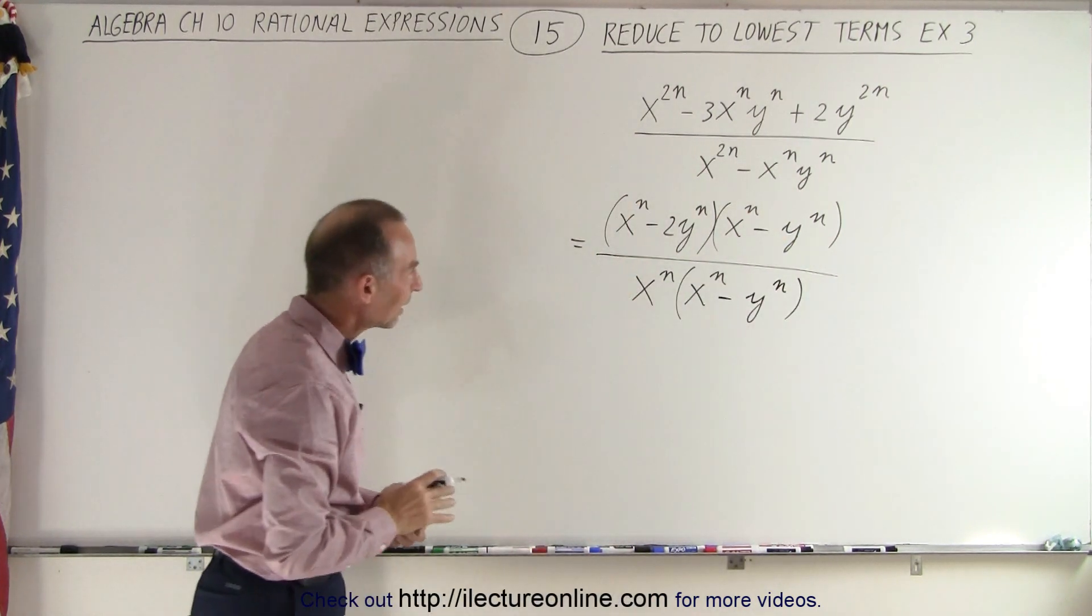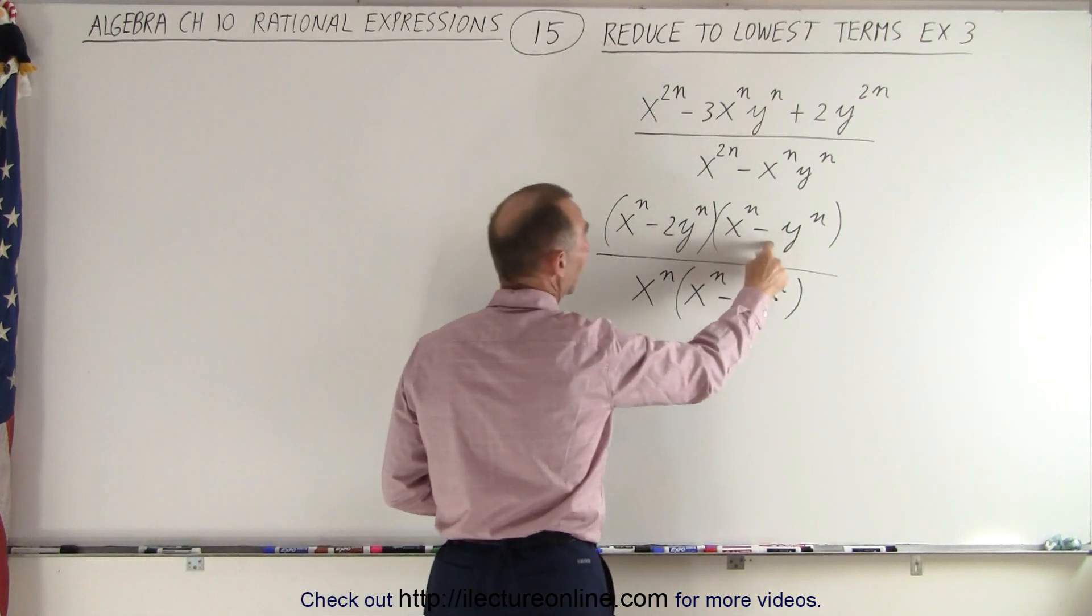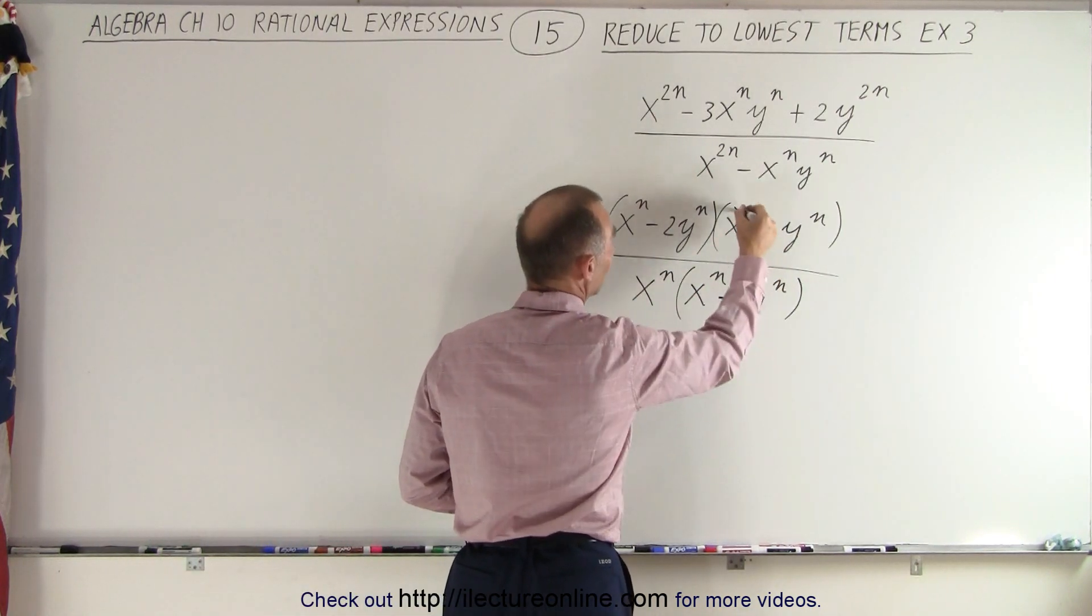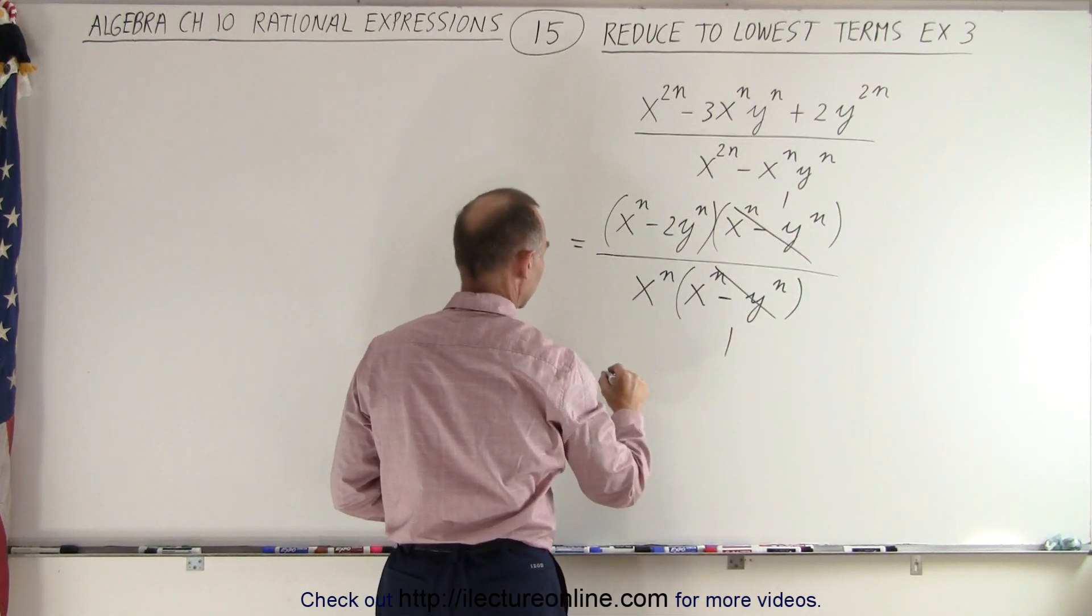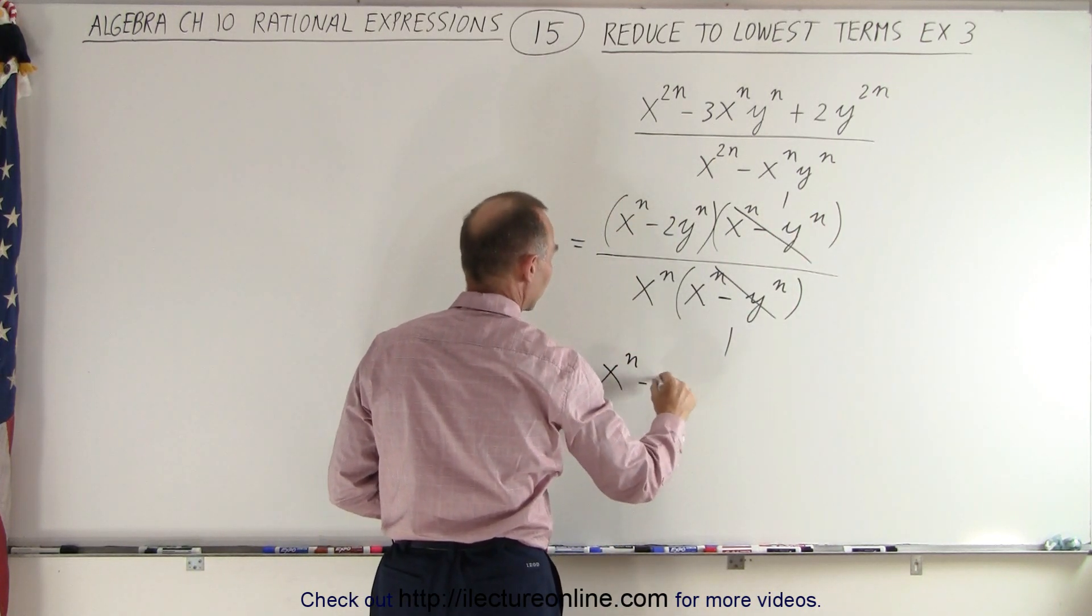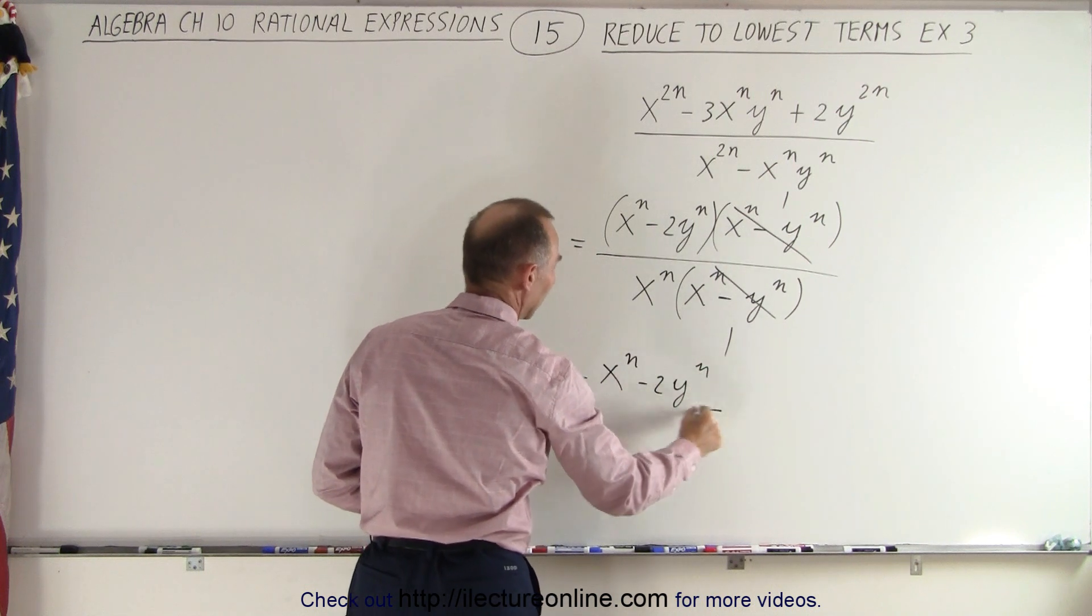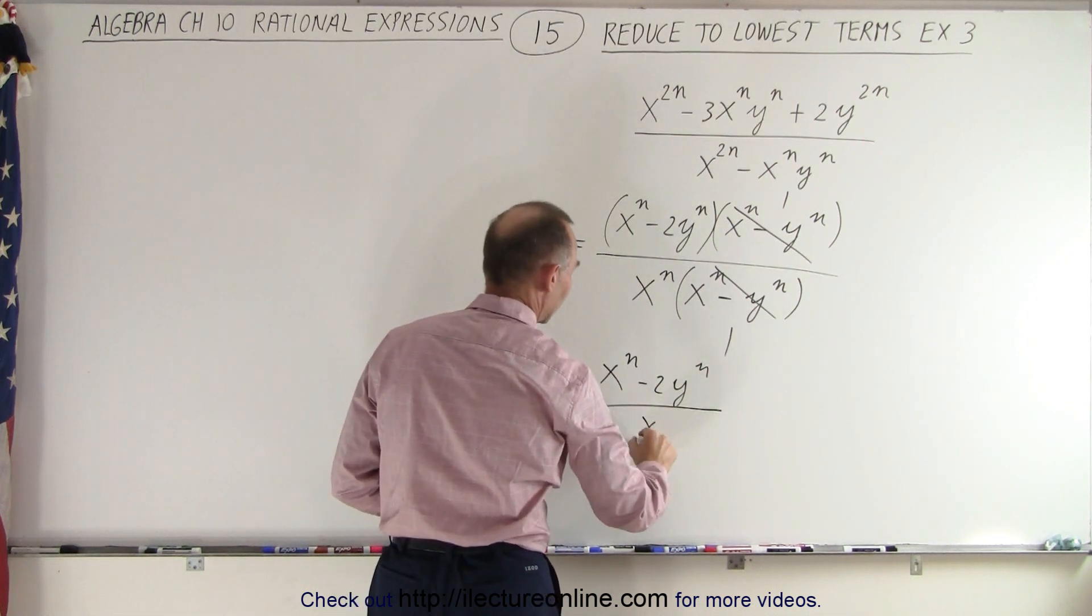Now is there anything that's common? The answer is yes. I have an x to the n minus y to the n. Same over here. That cancels out. This becomes 1 and 1. So I'm left with a numerator that is x to the n minus 2y to the n. In the denominator I have an x to the n.